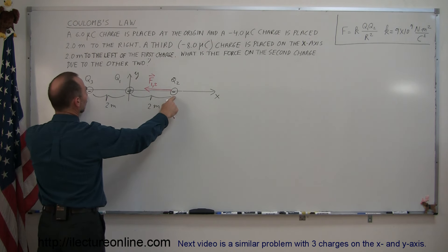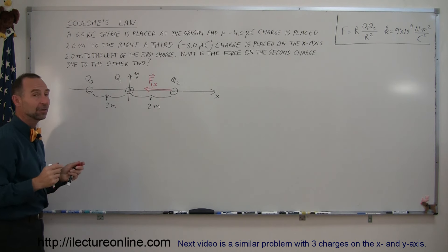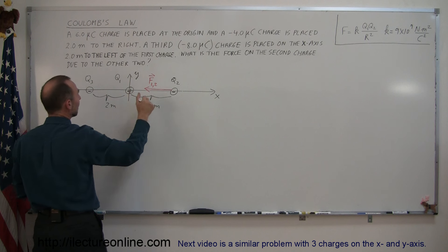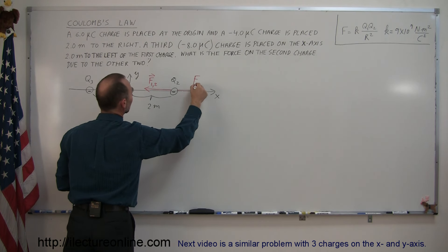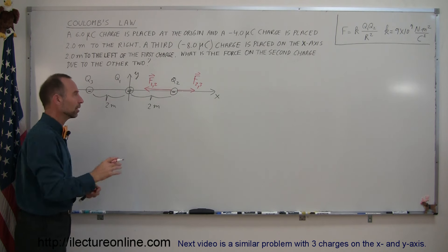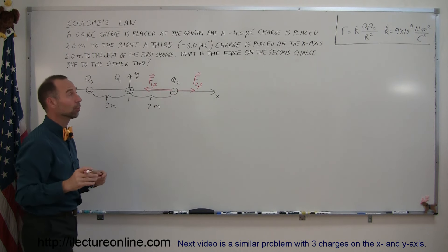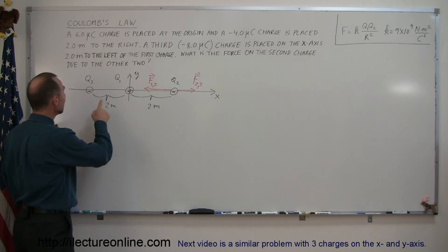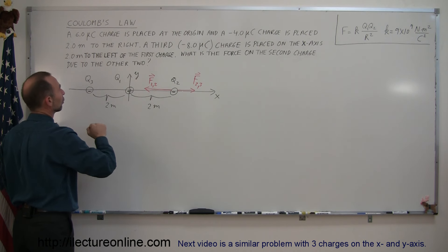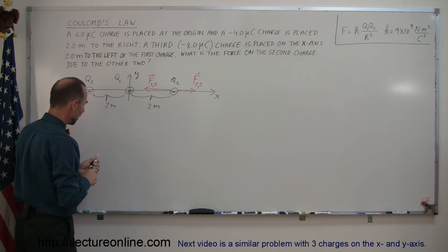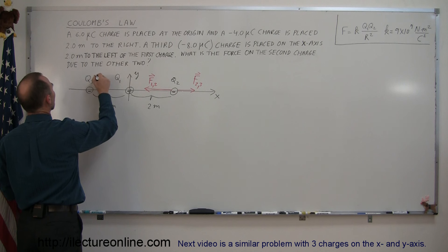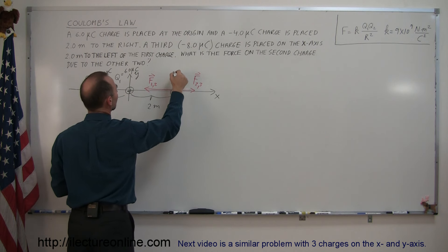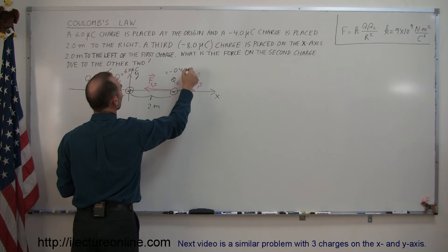Now we're going to consider these two forces. What is the force on q2 due to the presence of q3? These two charges are both negative, so they repel each other. The force on q2 due to q3 should be to the right — this is F23. I drew this arrow a little shorter because the distance is twice as far, and by Coulomb's Law, force is proportional to the inverse of the distance squared. The charge values are: minus 8.0 microcoulombs, positive 6.0 microcoulombs, and negative 4.0 microcoulombs.